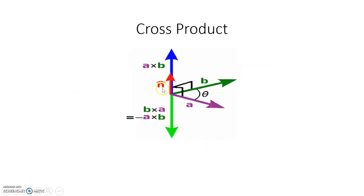Second is the cross product. If we multiply two vectors and the product is a vector, then it is called the cross product. It is a vector quantity, so it has magnitude and direction. Direction can be calculated by using the right-hand curl. From a to b, the direction is upward, and from b to a, the direction is downward.